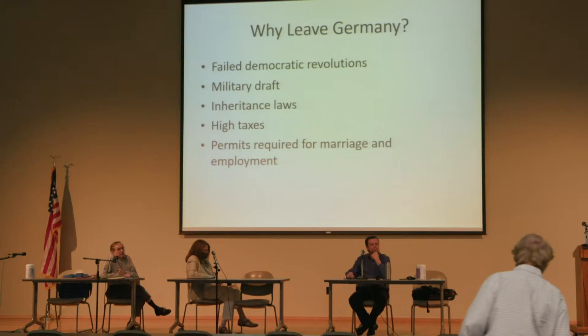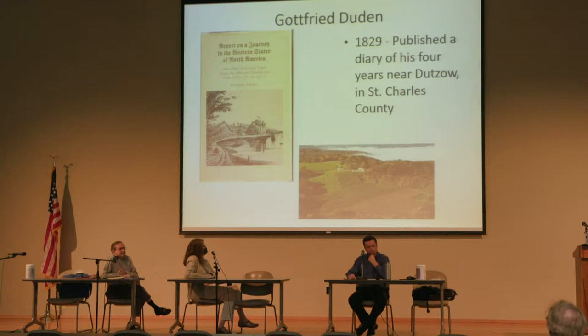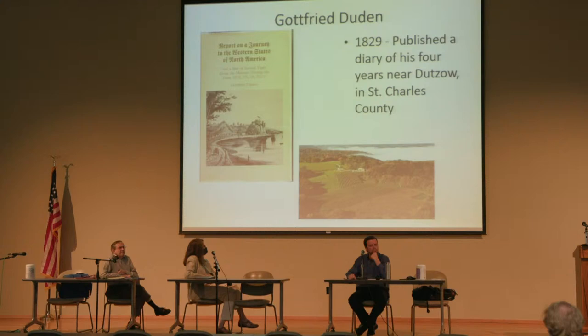They were attracted to Missouri by a small book published by Mr. Duden in 1829. He had come over in 1824, lived for five years outside of Dutzow in southern St. Charles County, then went back to Germany and wrote a small book that became a bestseller for people who wanted to immigrate. It said Missouri has beautiful hillsides where you can grow grapes, bottom land along the river, winters that are never very cold, and summers that are never very hot — well, those were mild years when he was here.